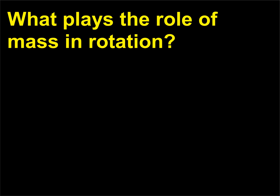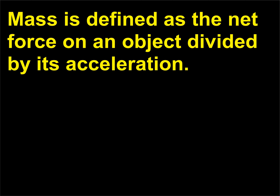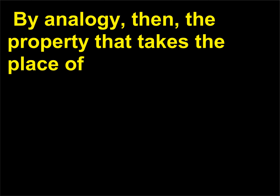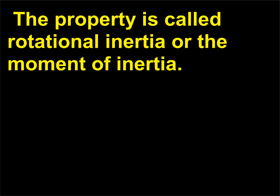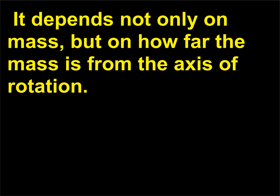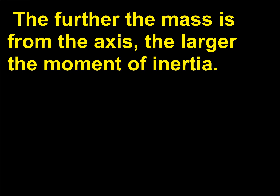What plays the role of mass in rotation? Mass is defined as the net force on an object divided by its acceleration. By analogy, the property that takes the place of mass should be the torque divided by angular acceleration. This property is called rotational inertia, or the moment of inertia. It depends not only on mass, but on how far the mass is from the axis of rotation. The further the mass is from the axis, the larger the moment of inertia.